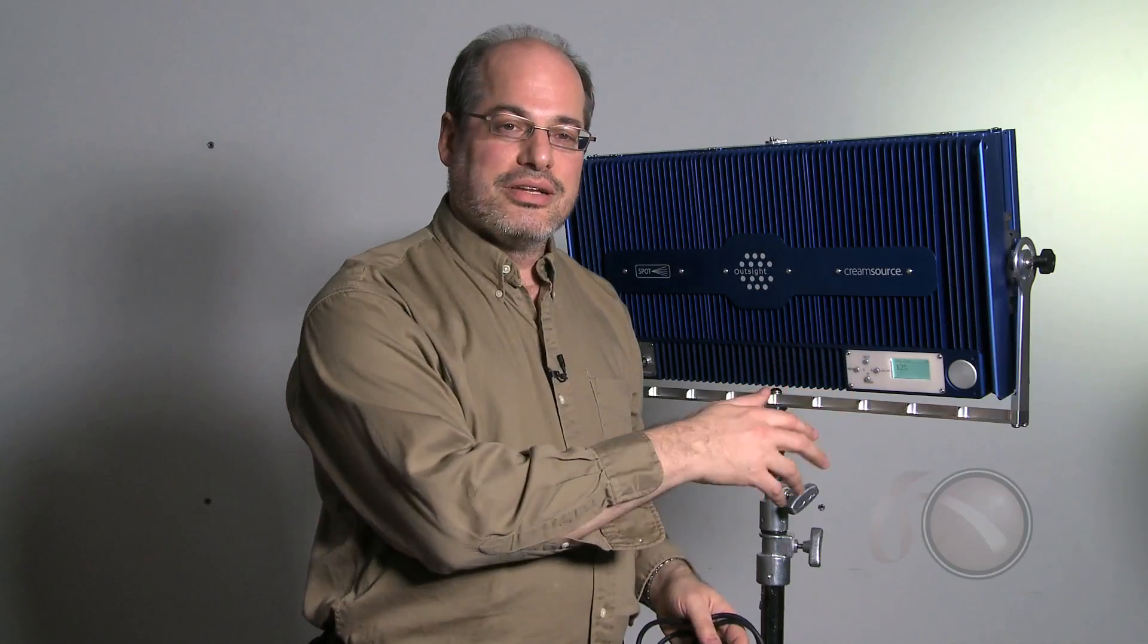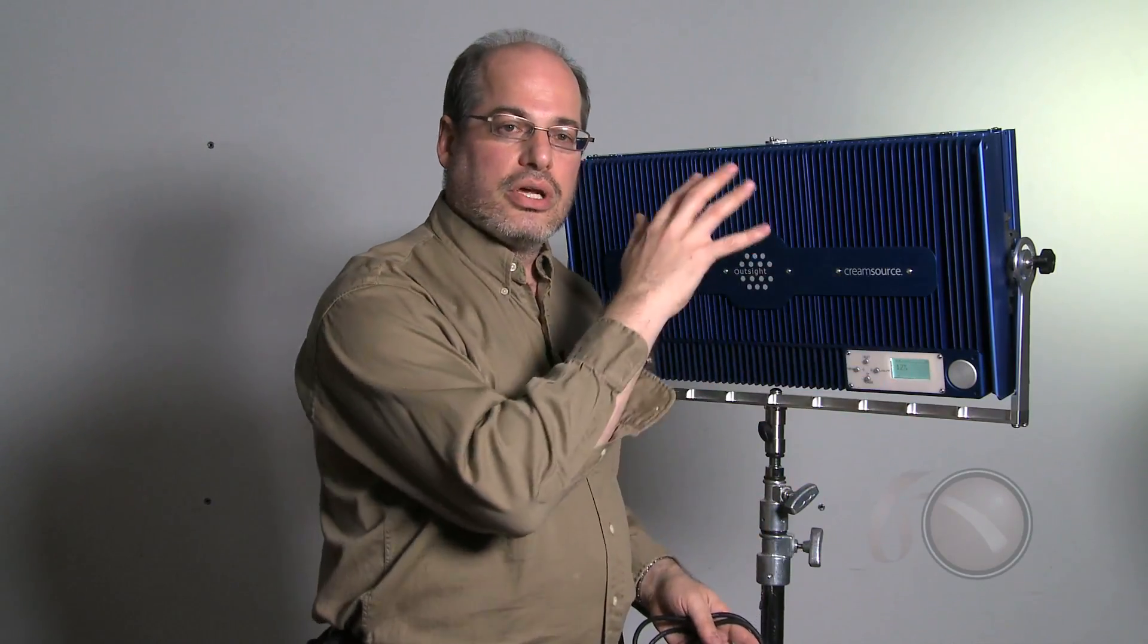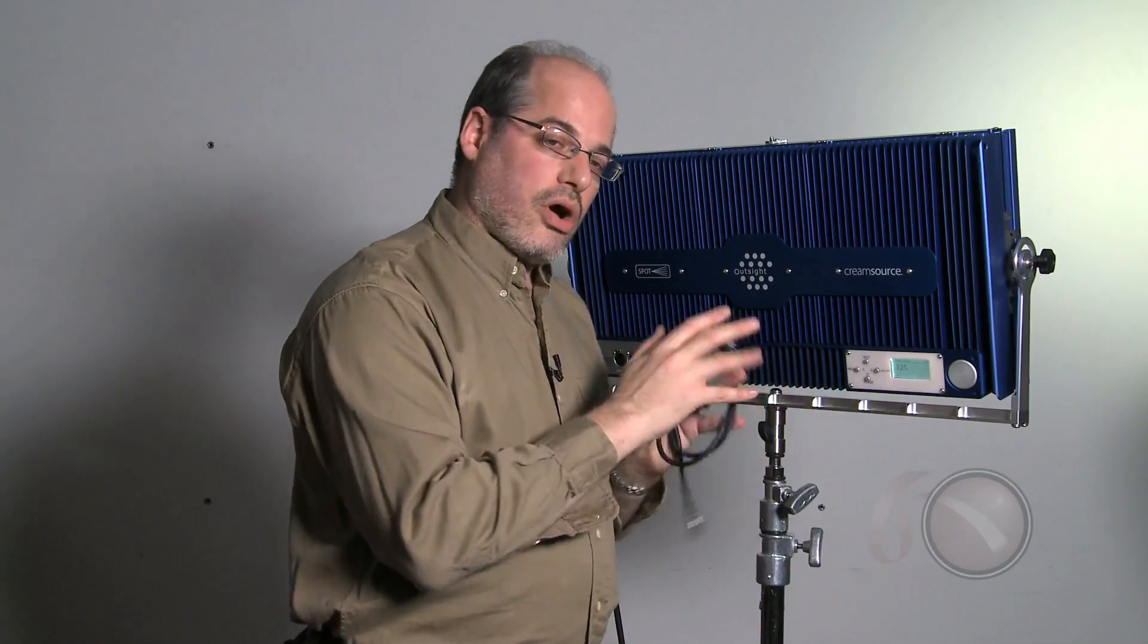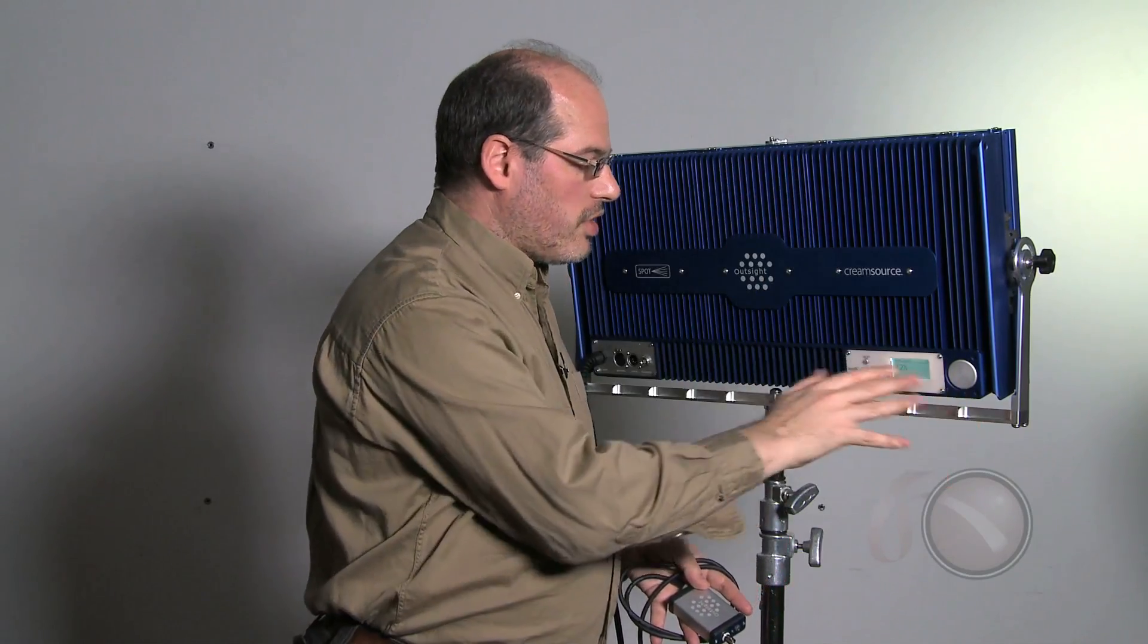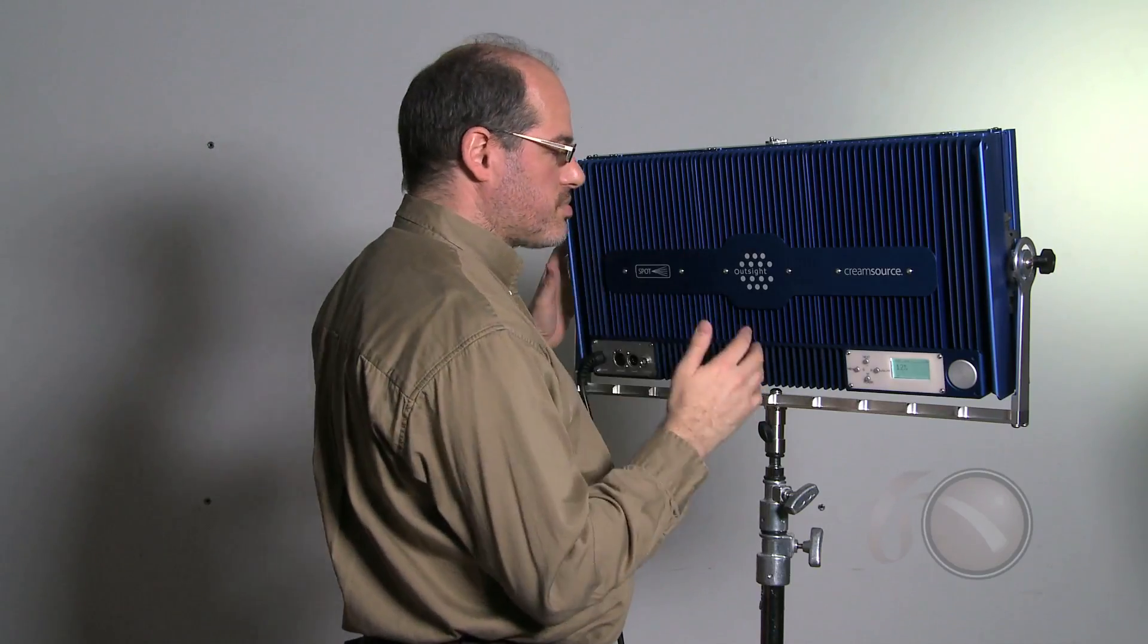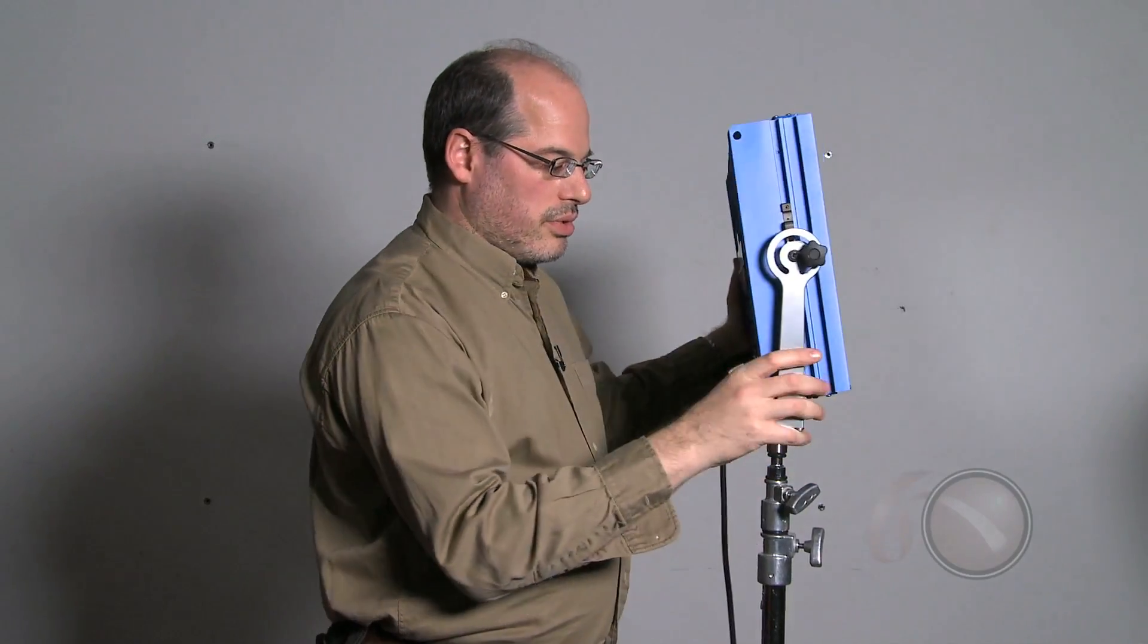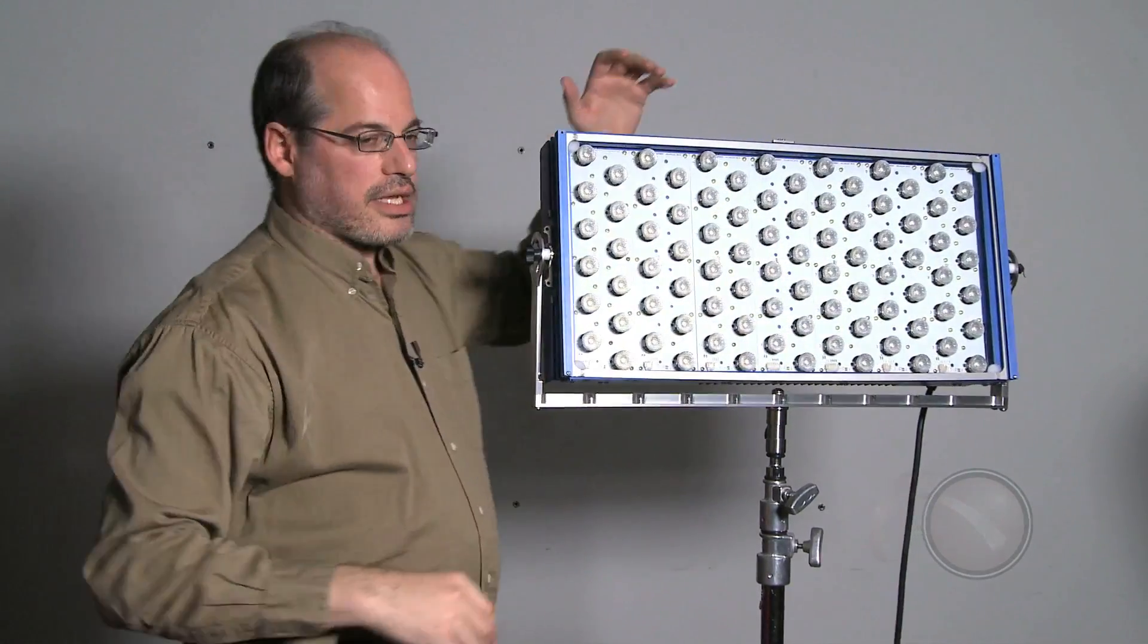And you can then go into a menu here and shift it if you want to create a weird effect or something, but you can adjust the frequency either automatically or indirectly off of the control box. With a lot of adjustment available from this light, it is again the Cream Source by Outsight, available here from Abel Cinetech.